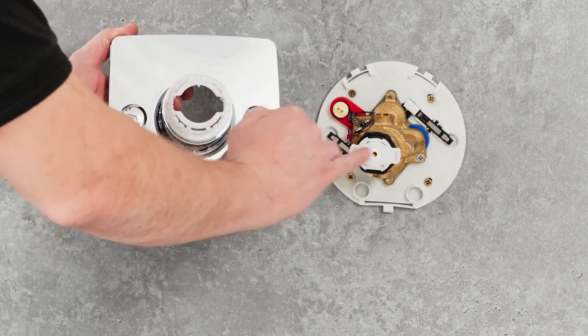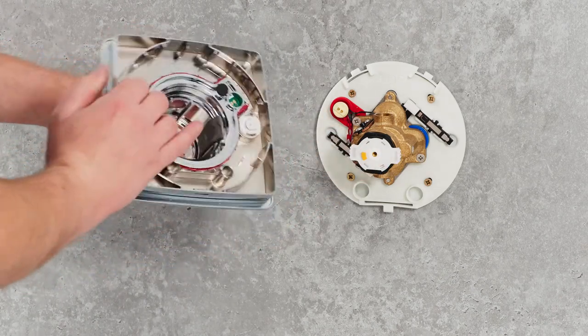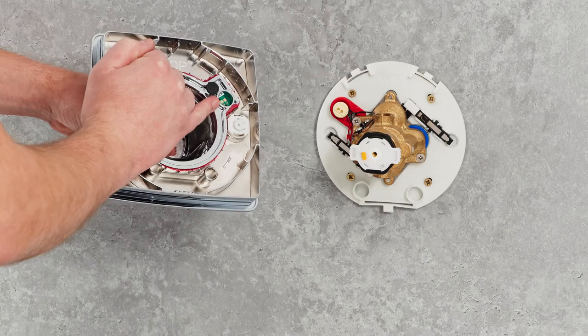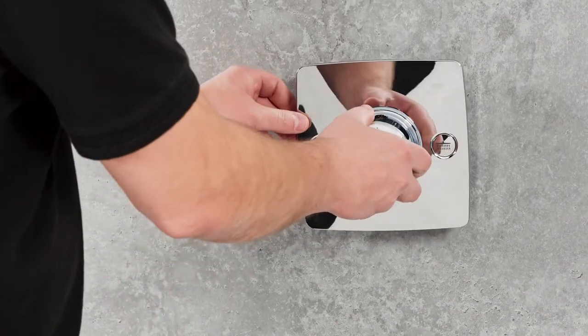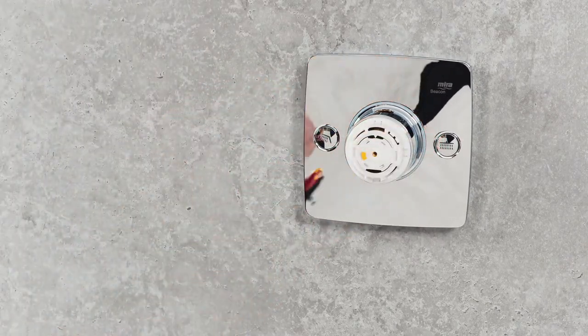The cover shroud can then be clipped into place, aligning the splines on the valve with those on the shroud housing. The cover shroud also features the electrical conductors which connect the cover LEDs powered by our Hydroglow technology.